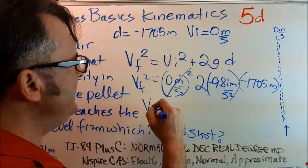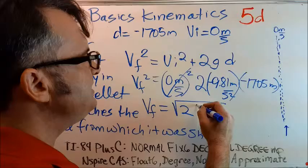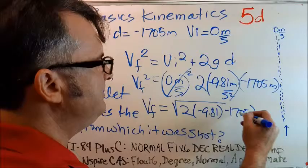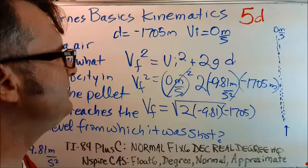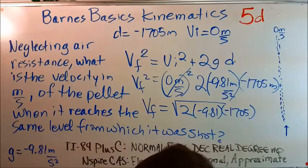VF is in effect the square root of 2 times negative 9.81 multiplied by negative 1705. To make this rather simple, I took the square root of both sides—do the same thing to both sides and we're good to go. Let's multiply these numbers first, and then we'll take the square root.